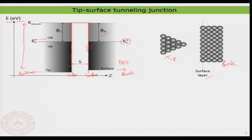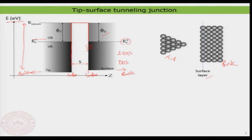This is an idealized situation that is not applicable to all cases, but it is good to start with for understanding purposes. We are using a constant density of state for both the sample and the tip near the surface — this is known as the local density of state, related to the specific location near the surface where we are looking.